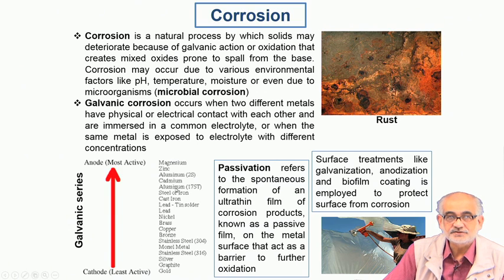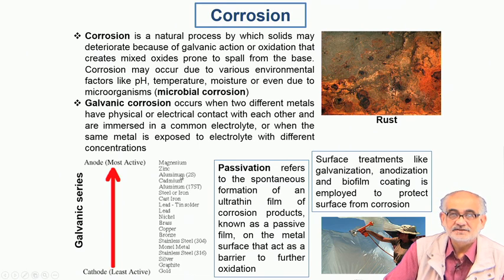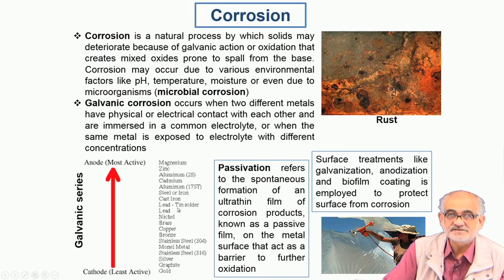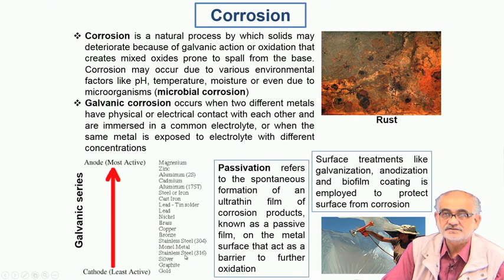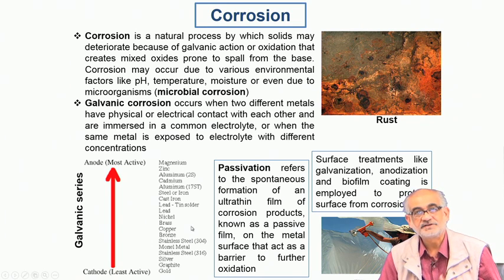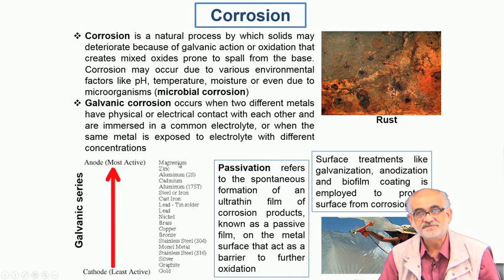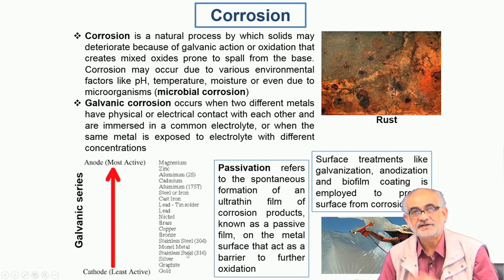Metals at the top of the series are very prone to donating electrons and getting oxidized. If there is an electrolyte which can conduct the electrons or the ionized species, it transfers the electrons to the cathodic part of the cell, and that is how the transfer of electrons leads to gradual degradation of these metals into another form.